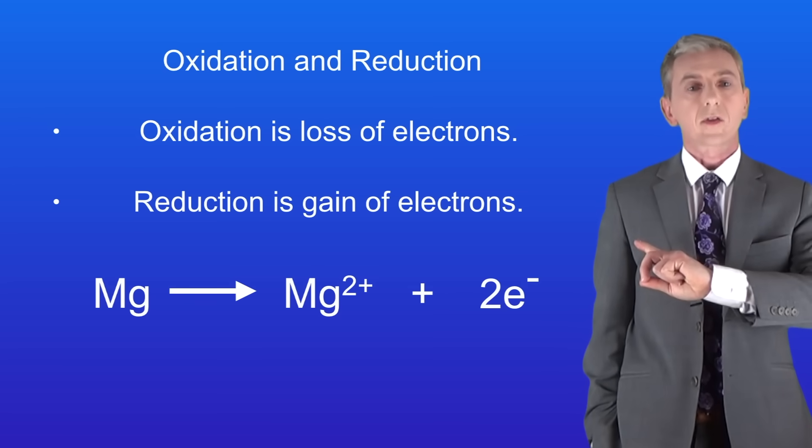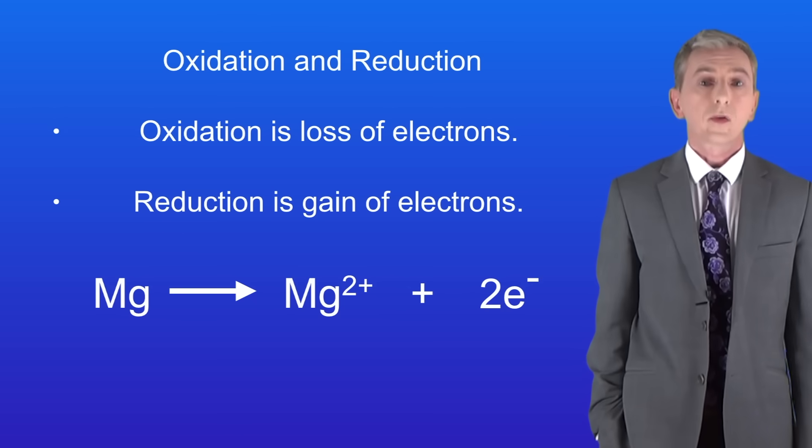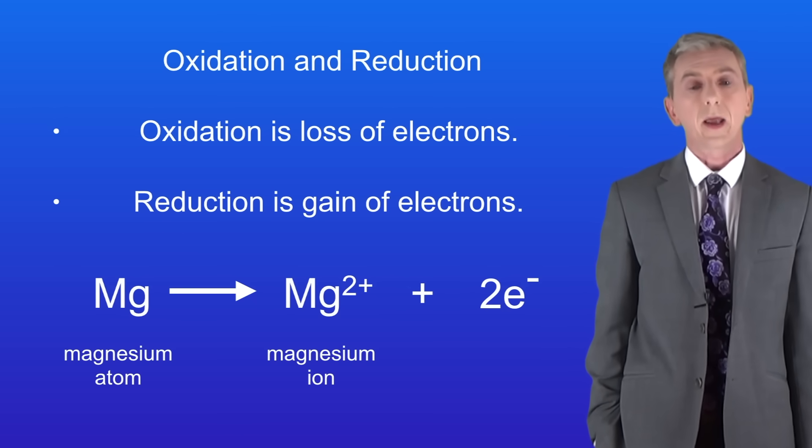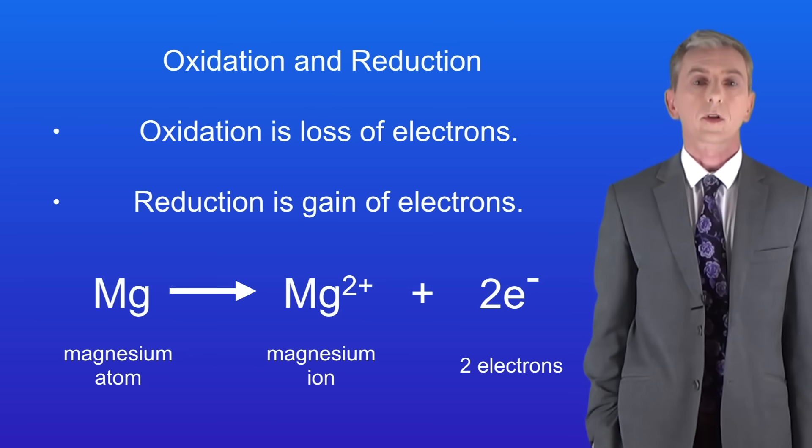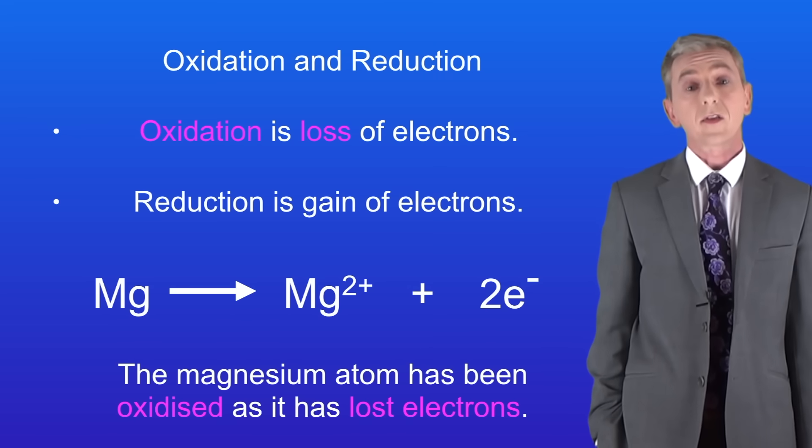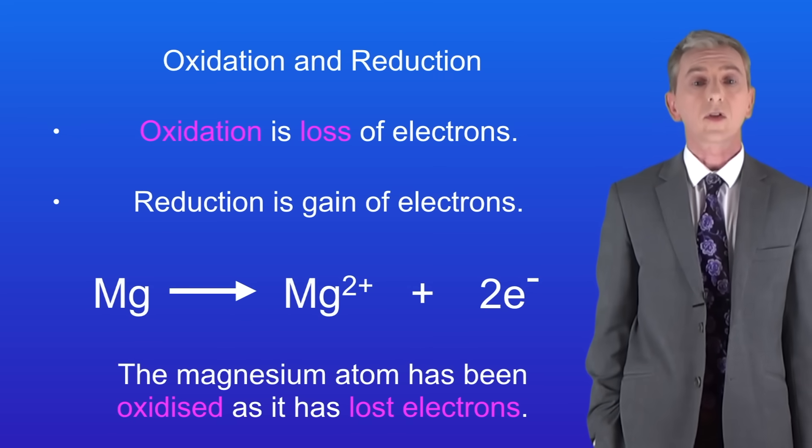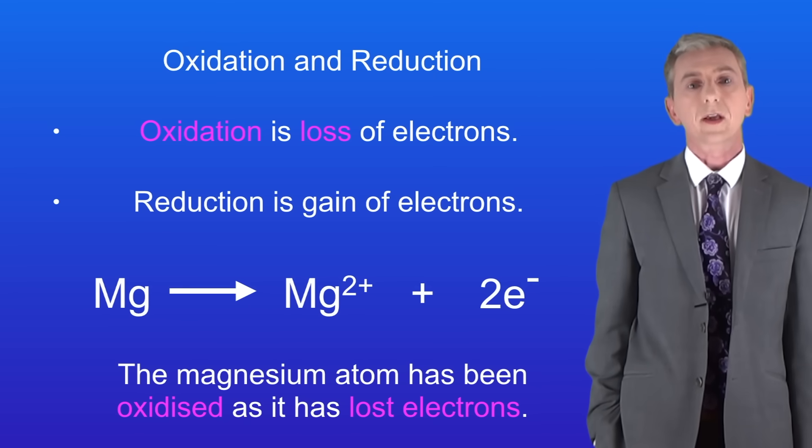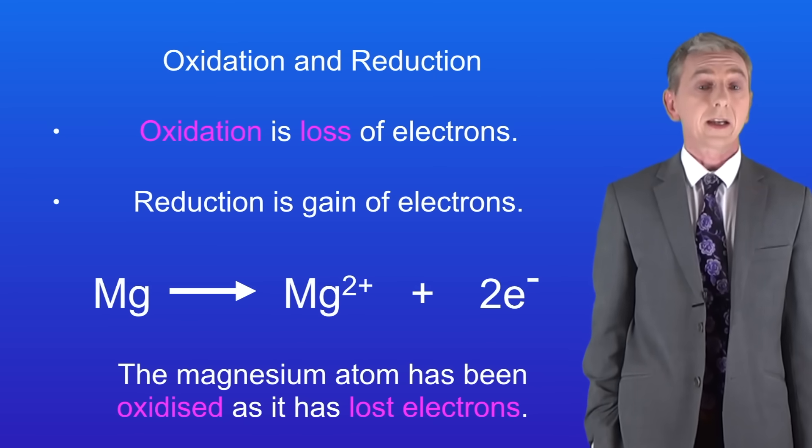Here's an example to illustrate the idea. We've got a magnesium atom forming the magnesium ion, Mg²⁺, and two electrons. In this case, we can see that the magnesium atom has been oxidized as it's lost electrons. Scientists call equations such as this one a half equation, and we're going to be seeing these again in later videos.